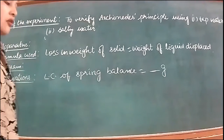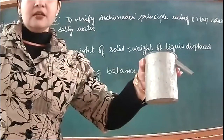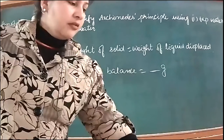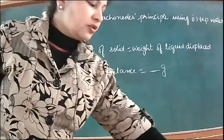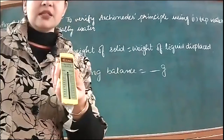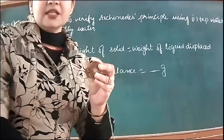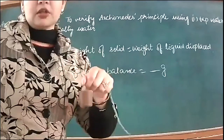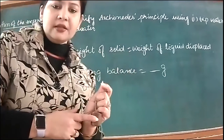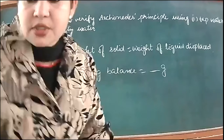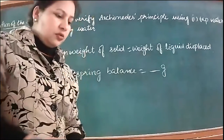The materials we are going to use are: an overflow container, a beaker, a spring balance, and the solid object — in this case a rubber cork with thread. The rubber cork is our solid and the liquid is water.